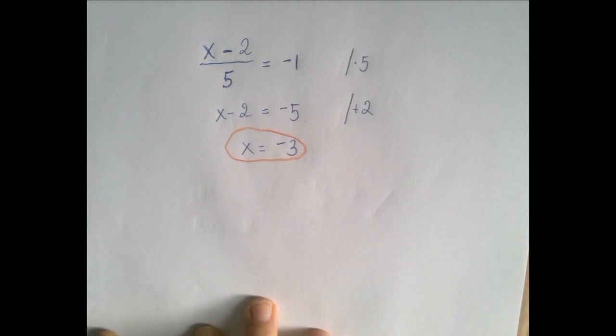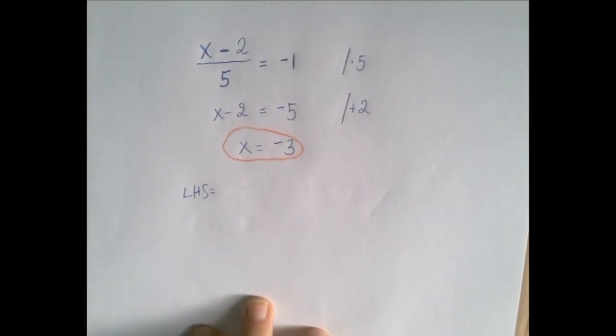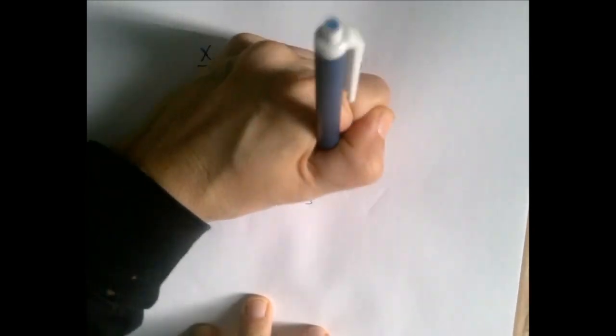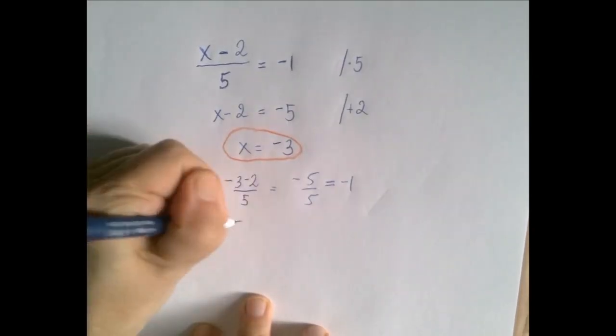We should check. If x equals negative 3, then the left-hand side, x minus 2 over 5, becomes negative 3 minus 2 over 5, which is negative 5 over 5, which is negative 1. So the right-hand side is negative 1.